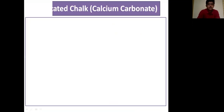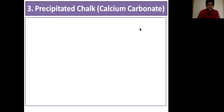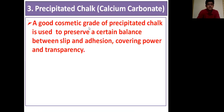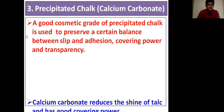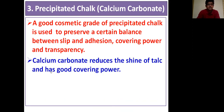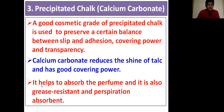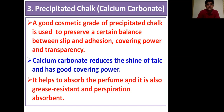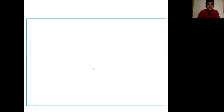The third constituent is precipitated chalk, also known as calcium carbonate. A good cosmetic grade of precipitated chalk is used to preserve a balance between slip, adhesion, covering power, and transparency. Calcium carbonate reduces the shine of talc, has good covering power, helps to absorb perfumes, and is grease-resistant and perspiration-absorbent.